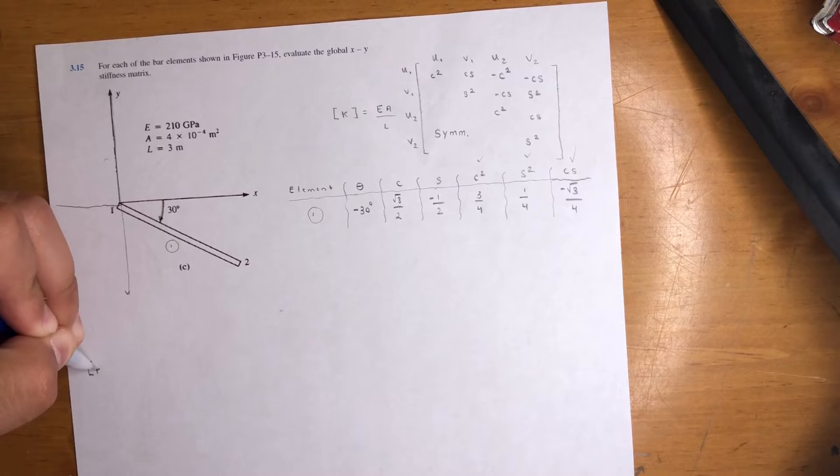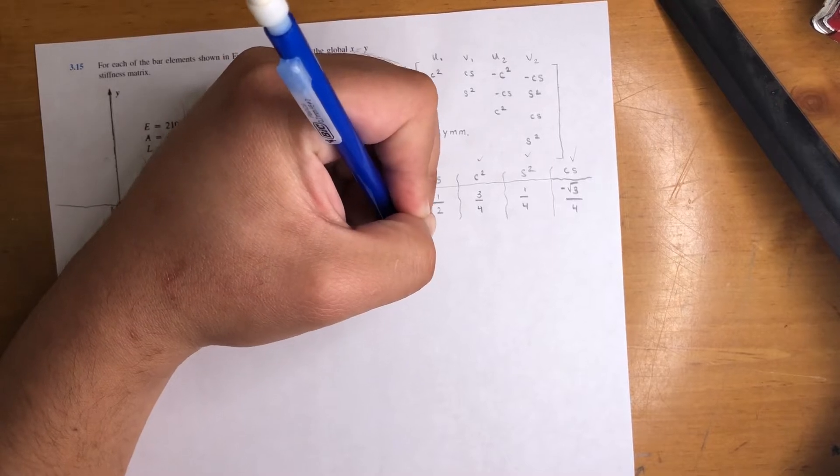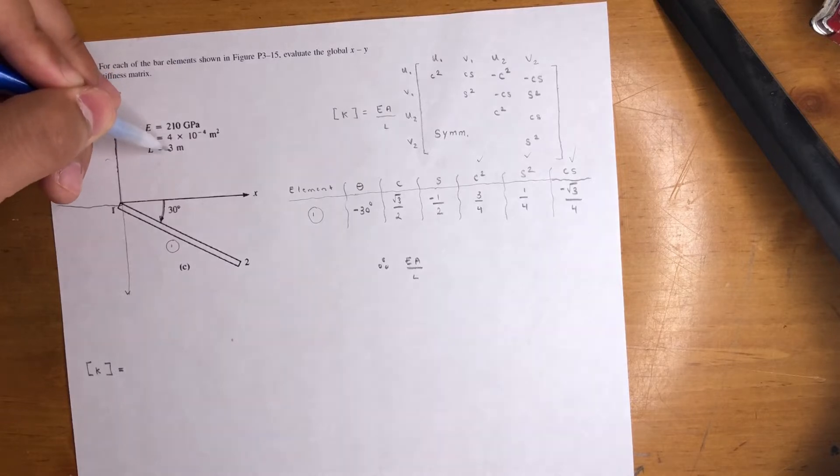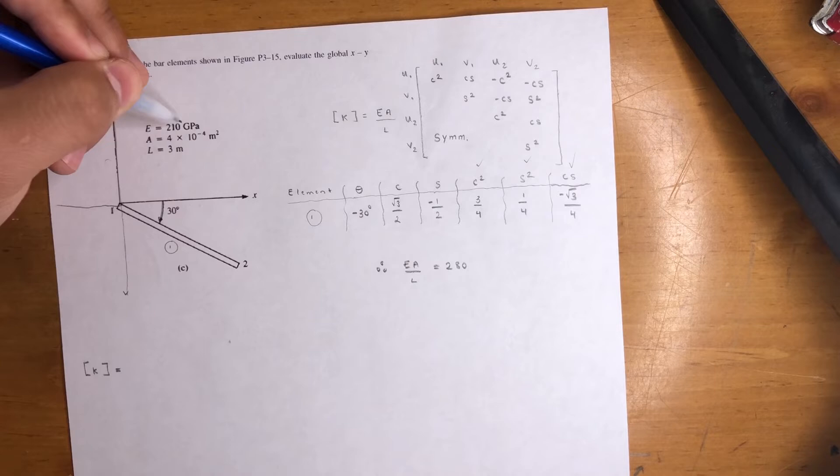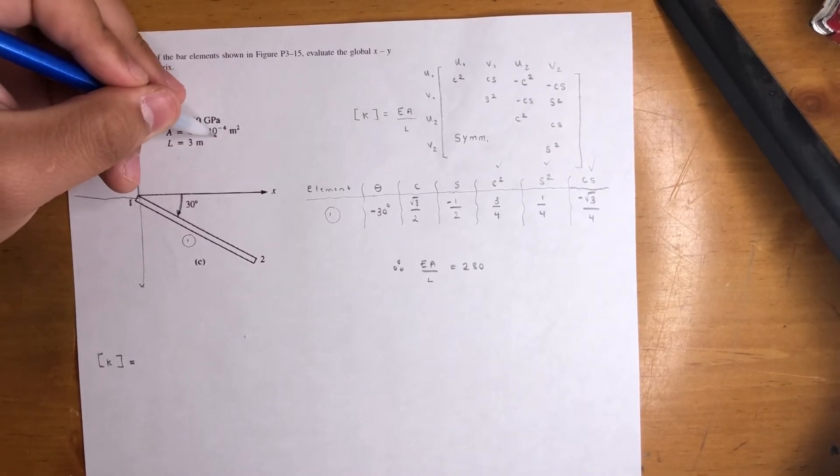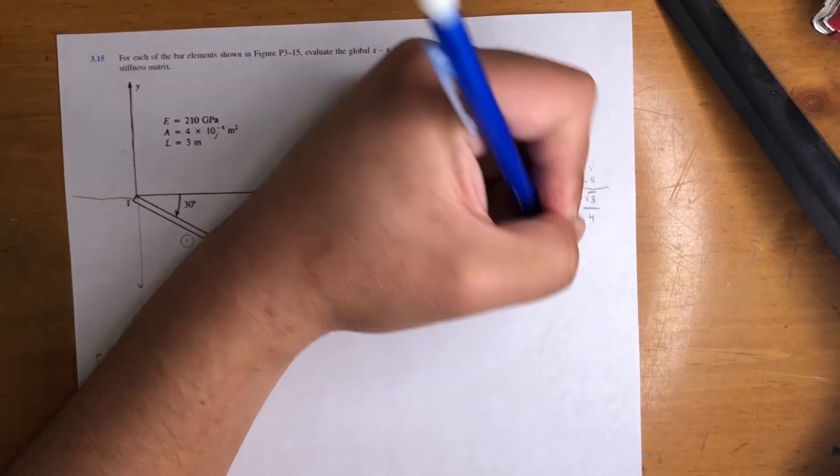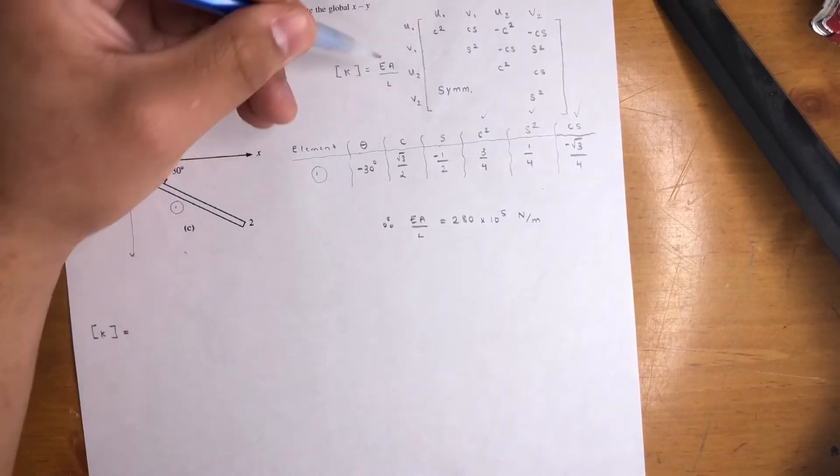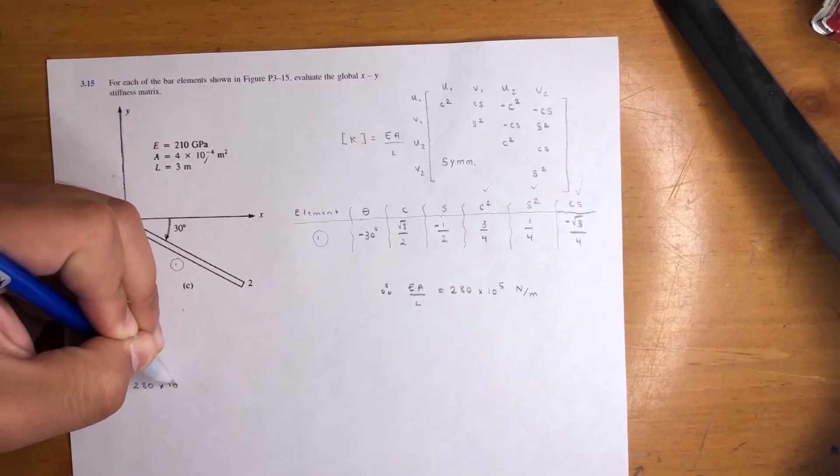K matrix, stiffness matrix will be - oh, one more thing - E A over L. So E A over L, that is 210 times 4 divided by 3. That's going to be 280. Now gigapascals is 10 to the 9, 10 to the negative 4 for area. So that means it's times 10 to the 5th. And that is newton per meter, it's a stiffness. So let's go ahead and continue. So we're going to put 280 times 10 to the 5th.